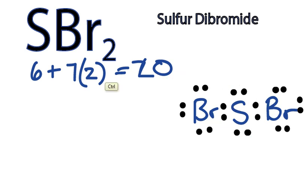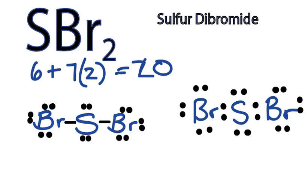So that's the Lewis structure for SBr2. If we wanted to draw out a structural formula, we could draw it like this right here, and that's it.